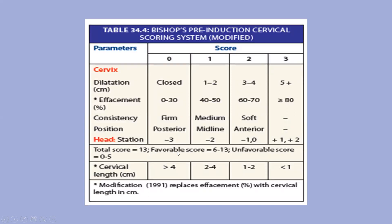The total score is out of 13. A favourable score is 6 to 13, and an unfavourable score is 5 or less. The modification replaces effacement percentage with cervical length in centimetres: >4 cm = 0 points, 2–4 cm = 1 point, 1–2 cm = 2 points, and less than 1 cm = 2 points.